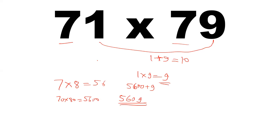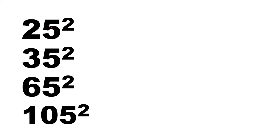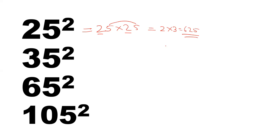This type of multiplication is very helpful in finding squares of numbers. For 25 squared — that is 25 into 25 — the tens digit is same and the sum of unit digits is 10 (5 plus 5). We apply the formula: multiply 2 by the next number 3 to get 6, then multiply 5 by 5 to get 25. So the square of 25 is 625.